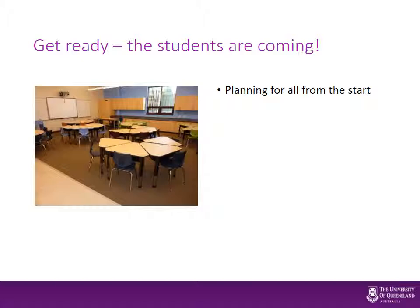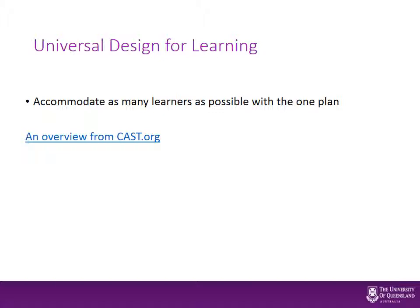This idea of universal design in buildings has been translated into education. Just like an architect might design a building that makes it accessible to as many people as possible — so that you don't have to then expensively change things when you have somebody with particular needs — what we do in planning classroom lessons is we imagine as many learning support needs as we can and we build it into the plan. Universal design for learning is about accommodating as many learners as possible, and one of the nice things about it is that it really does minimise how many adjustments you're going to need that are specific to a learner.